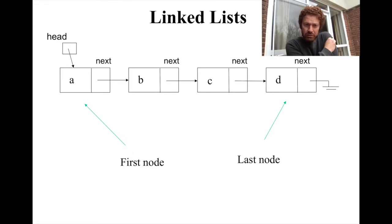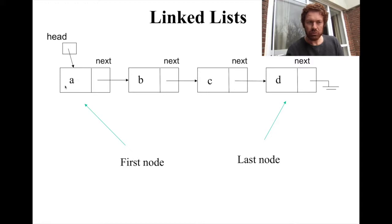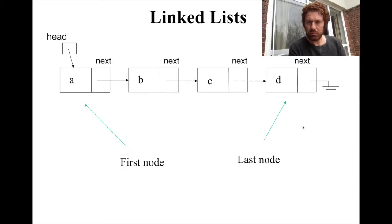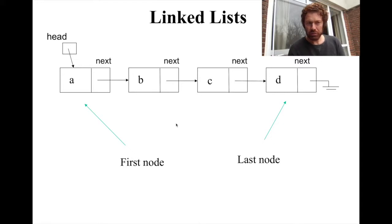Just like here, I have this head of my linked list pointing to the first element — the first node consisting of the data part as well as the pointer part. The pointer part points to the next node, which points to another node, and the final node's next will point to null, which we represent with this ground symbol. So this would be the first node and this would be the last node. These are the intermediate nodes, and head is the programmer's access to this linked list.